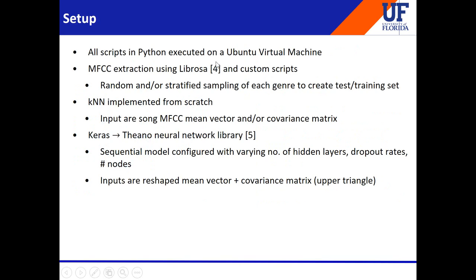All scripts were coded in Python in an open virtual machine environment. MFCC coefficients were extracted using the Librosa package and custom scripts. To isolate the test and training sets, we employed two schemes: random sampling and stratified sampling, ensuring a proportional number of each genre in both sets. The K-nearest neighbor algorithm was implemented from scratch, with inputs being the mean vector and covariance matrix for Mahalanobis distance. For the neural network, we used the Keras and PyTorch neural network packages with a sequential model and a varying number of hidden layers.